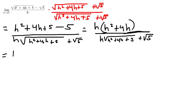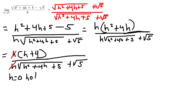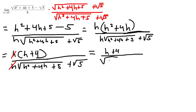We can cancel the h from both top and bottom. We are left with (h plus 4) over the square root of h squared plus 4h plus 5, plus the square root of 5. Now we can finally plug in h equals 0.